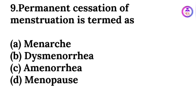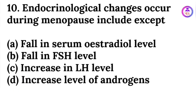Permanent cessation of menstruation is termed as menopause. Endocrinological changes occurring during menopause include — except which one? The answer is fall in the follicle stimulating hormone.